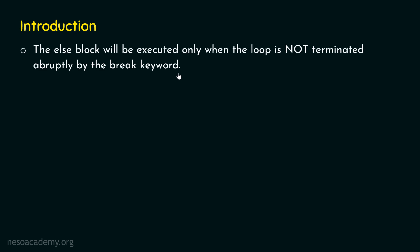For loop else block and while loop else block are not different — they are the same. The else block will only be executed when the loop is not terminated abruptly by the break keyword. Now let's see the syntax of for loop with else block.